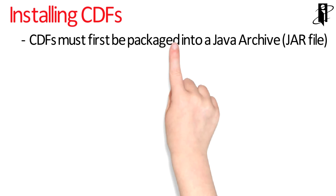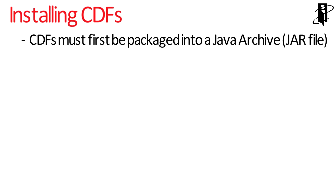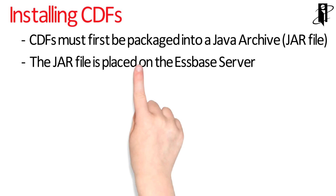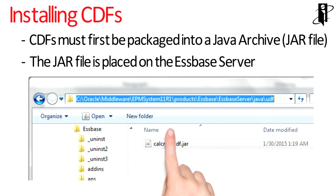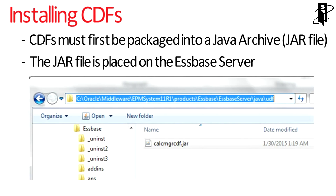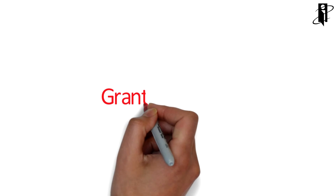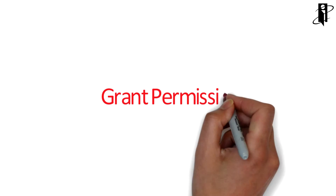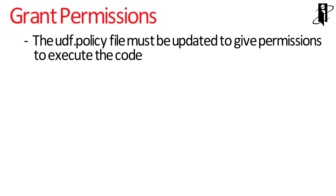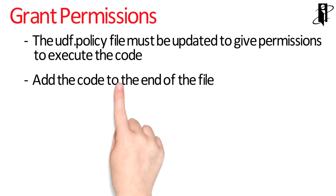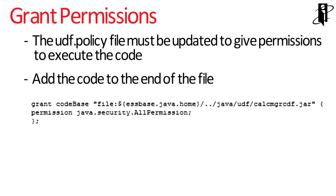To install a custom defined function, it must first be packaged into a Java archive, also known as a JAR file. The JAR file is then placed on the S-Base server in the Oracle Middleware EPM System 11 R1 Products S-Base S-Base Server Java UDF directory. Next, we grant permissions using the UDF.policy file, which must be updated to give the permissions so that S-Base can execute the Java code. We add the code to the end of the file.